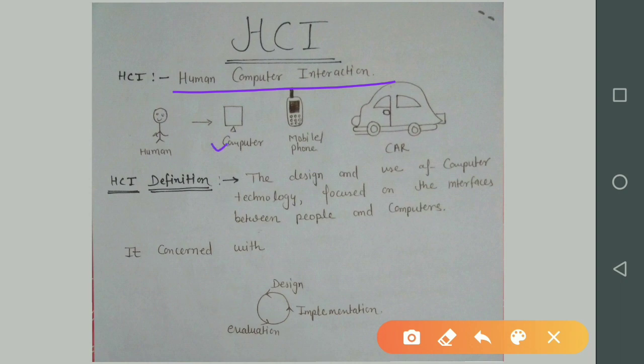Humans interact with computers, mobile phones, and cars. There are so many examples like calculator, alarm, watch, etc. Computers are everywhere in our life. So what is the definition of HCI? First, the design and use of computer technology focused on the interfaces between people and computers.